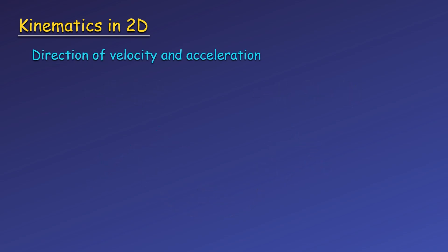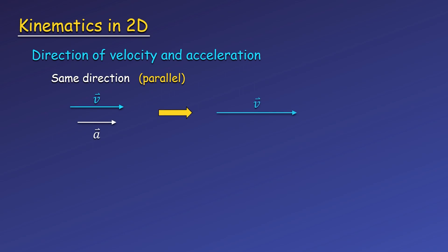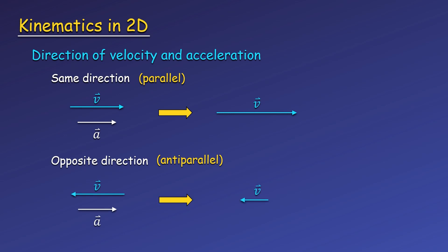Let's look at the relative directions of velocity and acceleration. In one dimension, there were only two cases. First, the velocity and acceleration could be in the same direction, or parallel — this leads to the velocity increasing in the same direction the object is already moving, so it will speed up. In the other case, the velocity and acceleration are in opposite directions, or anti-parallel. Here the object is accelerating in the opposite direction that it is moving, so it slows down, or decelerates.